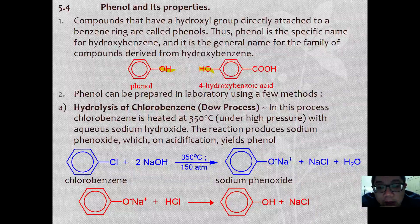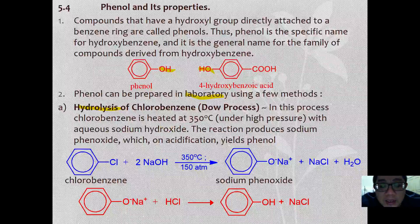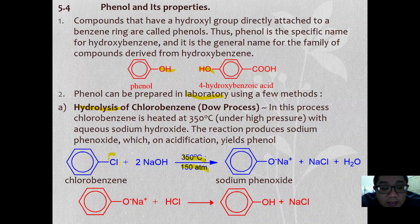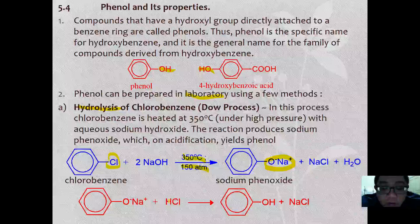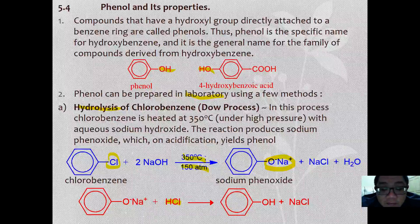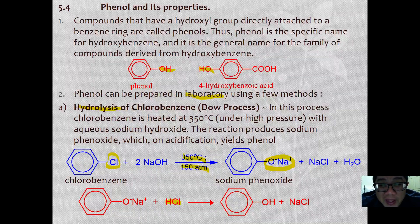Phenol can be prepared in the laboratory using a few methods. The first method is the hydrolysis of chlorobenzene, which is the least preferable. Under high temperature and high pressure, chlorobenzene hydrolyzes to first form sodium phenoxide by adding alkaline solution, and then the salt is acidified to form phenol. This method is least preferable because it requires high temperature and high pressure.